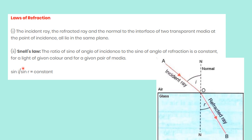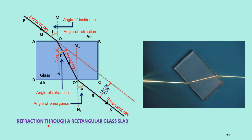These two laws you have to remember. Refraction through a rectangular glass slab — let us discuss in detail how refraction occurs in a glass slab. Consider a glass slab A, B, C, D. If any ray falls on the glass slab, consider one incident ray PQ — this is the incident ray.